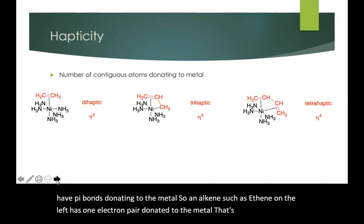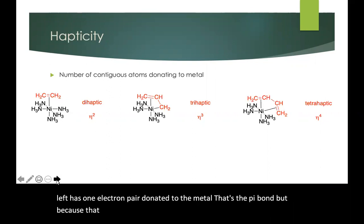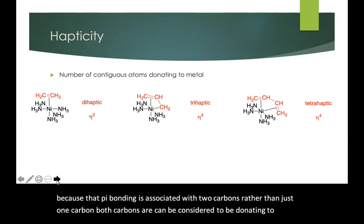An alkene such as ethene on the left has one electron pair donated to the metal, that's the pi bond, but because that pi bond is associated with two carbons rather than just one carbon, both carbons can be considered to be donating to the metal. They're both sharing those electrons with the metal.